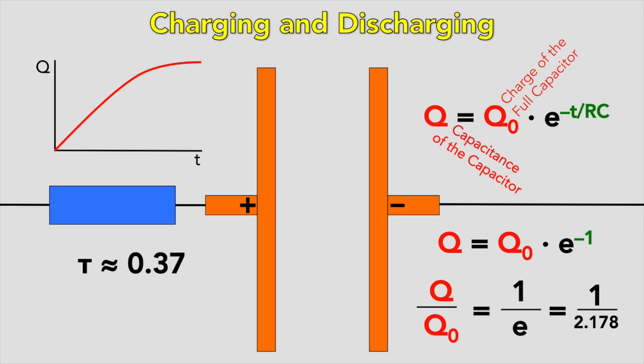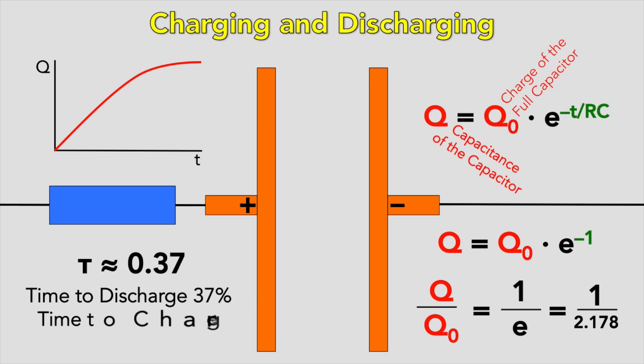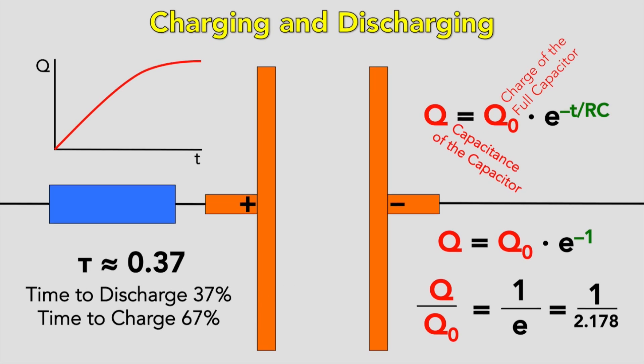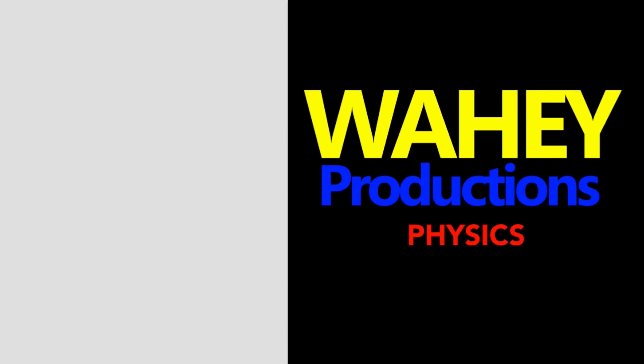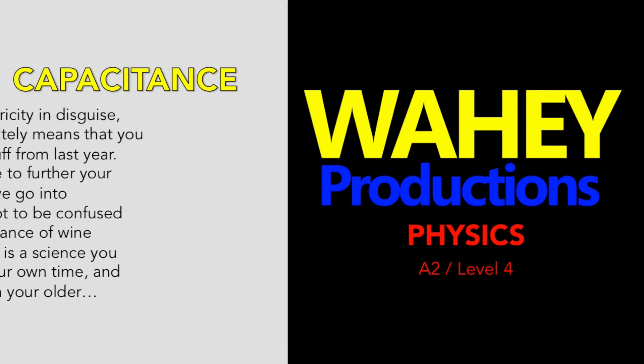The time constant tau is the time to discharge to 37% of the original charge, or to charge to 63%. I've been Conor Durkin — thank you for listening.